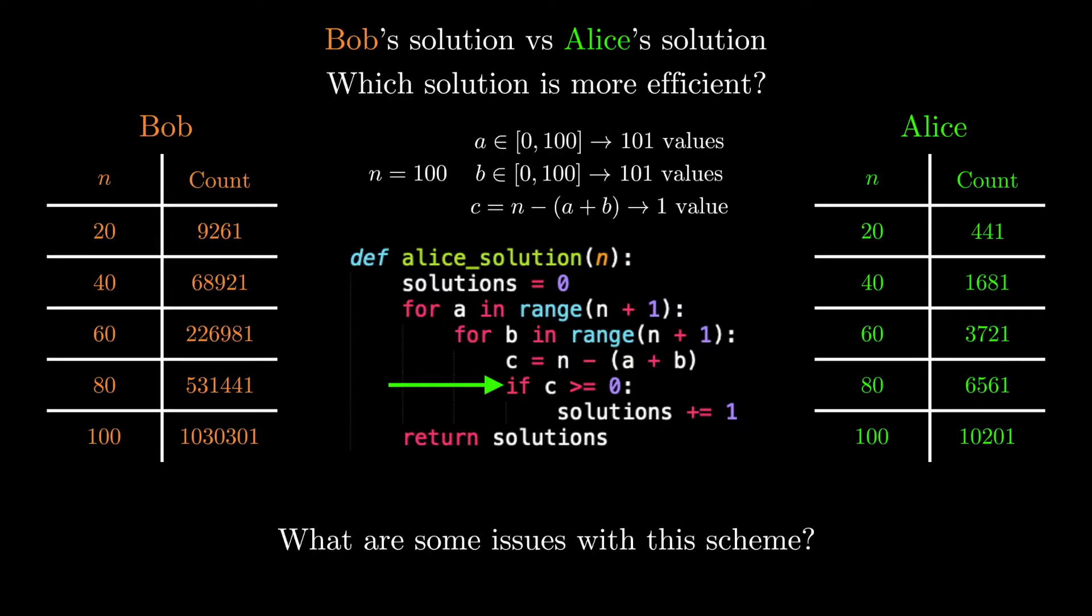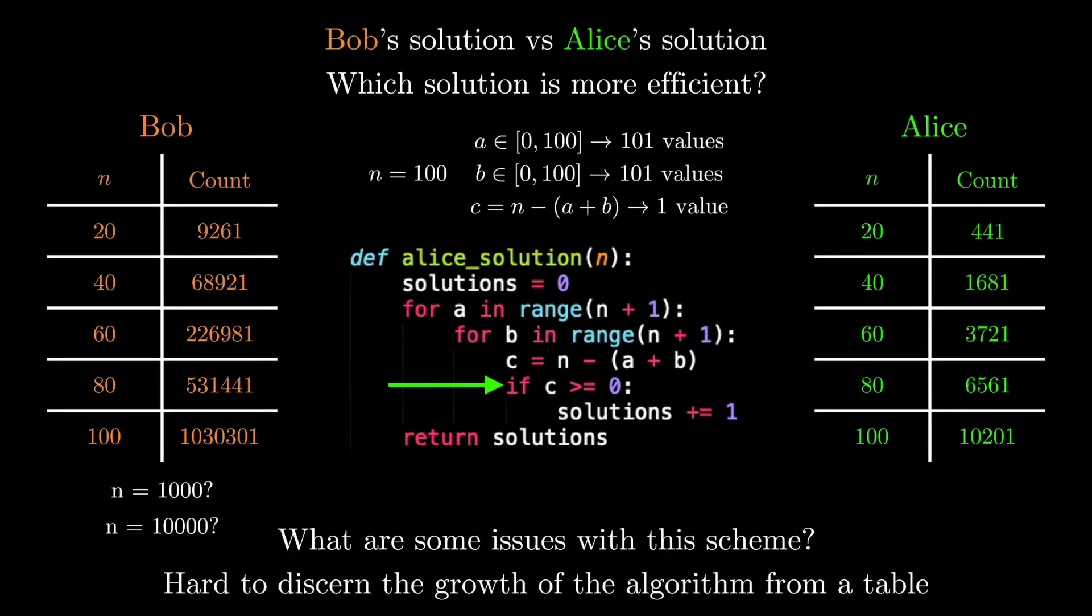This might be more subtle, but one thing that's not great about this scheme is we don't really have a good sense for how the algorithm grows as the input increases. If someone tells you Bob's algorithm runs around 1 million operations on an input of n equals 100, you're probably like, okay, that's good to know. But what if n is equal to 1,000? What if n is equal to 10,000? It's hard for you to estimate that by looking at this table of counts.